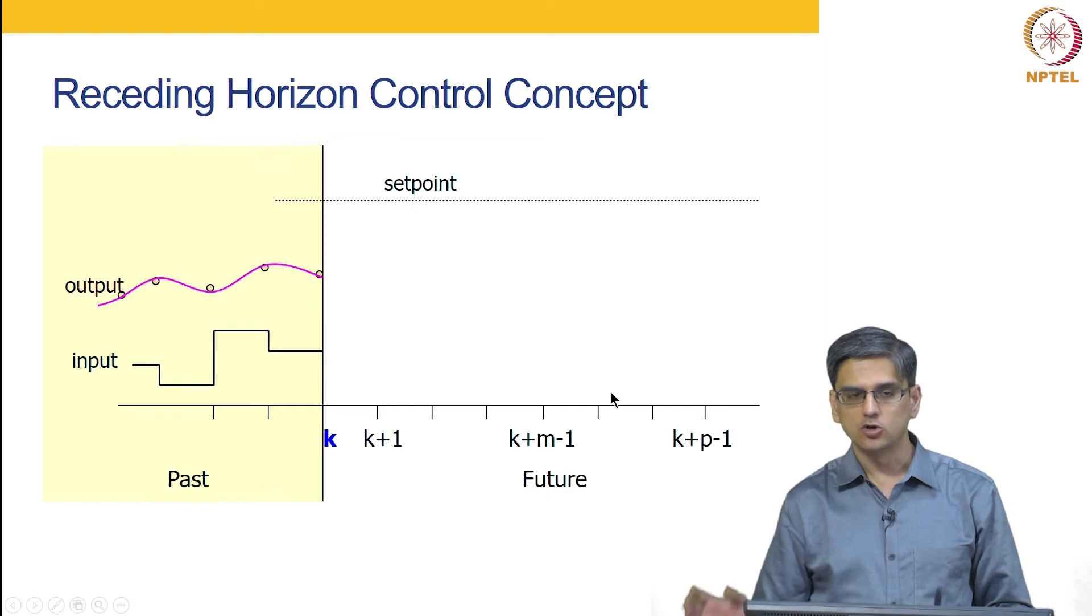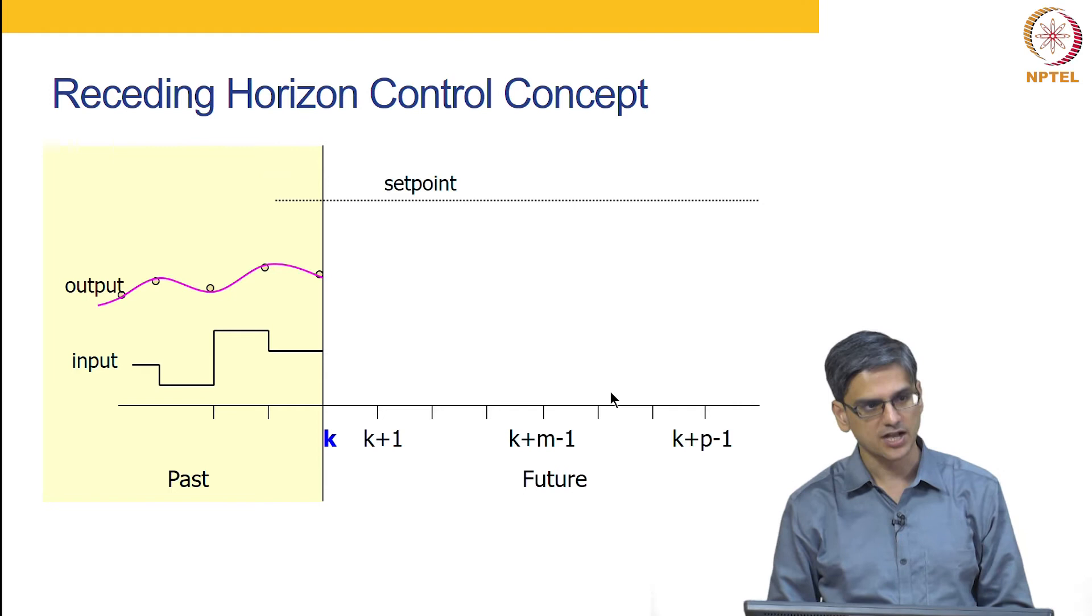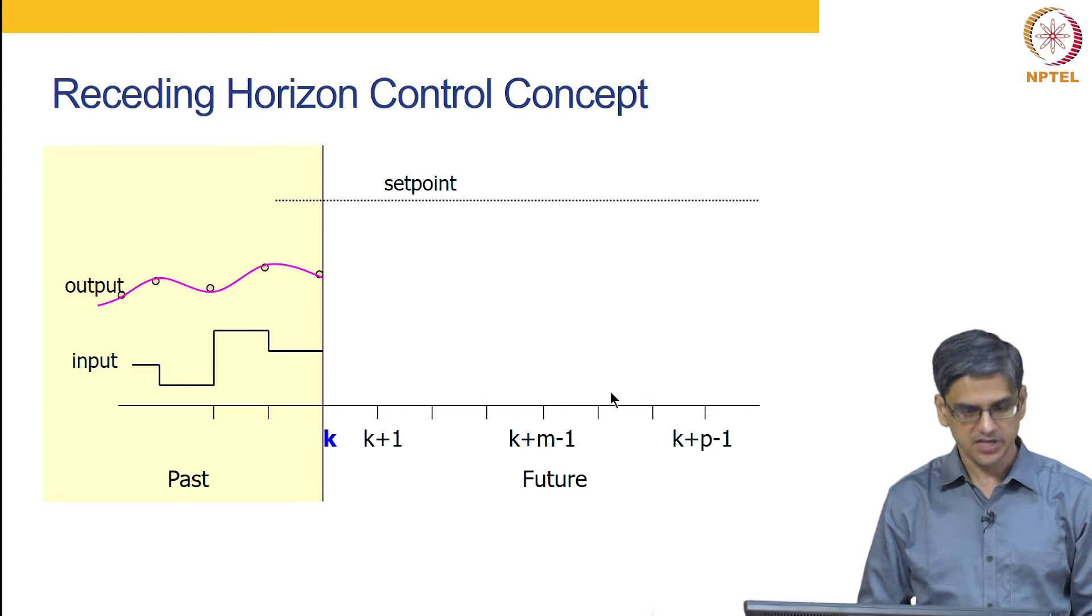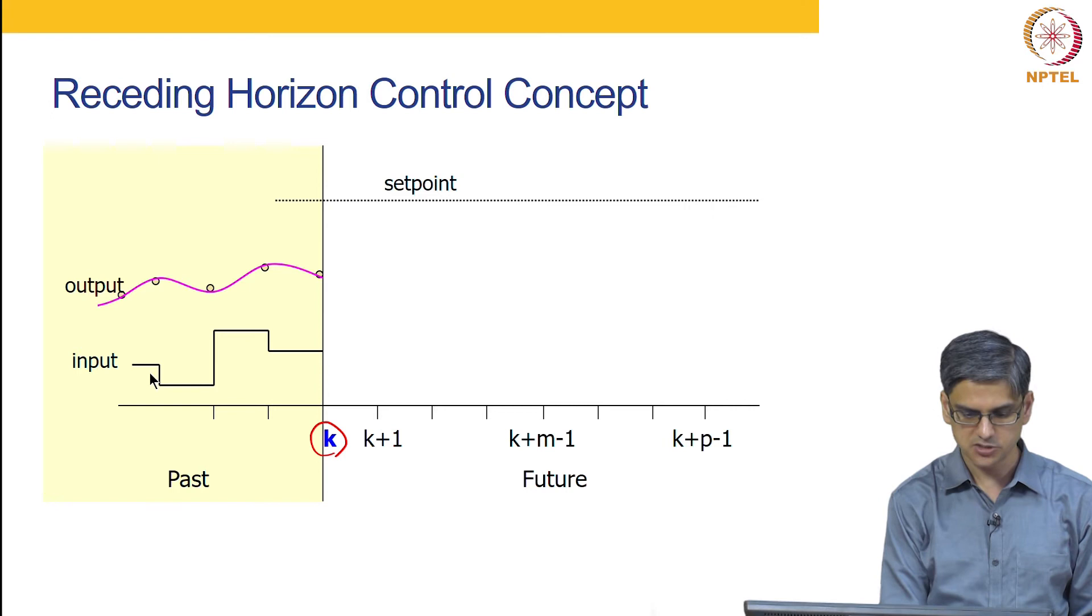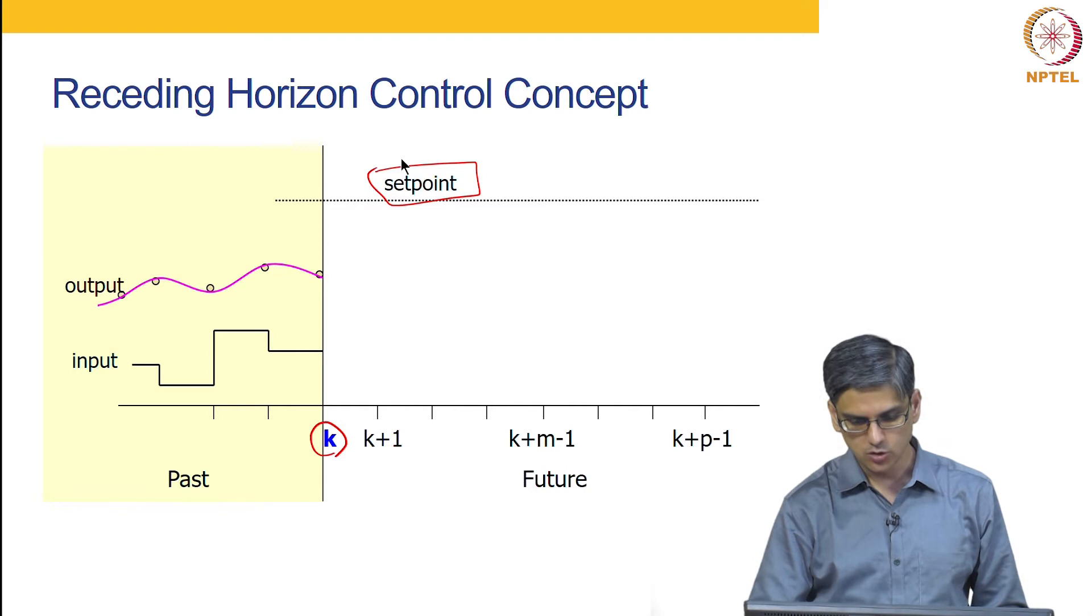So something that I talked about in words using an example 10 to 15, 11 to 16 and all that, we will just talk about the same thing using this graphic, what that receding horizon means. So as he had asked earlier, we have reached a current point k. This is how the past input trajectory is, this is how the past output trajectory is. This is where you want to go to the set point, and you want to go to the set point in the most optimal way.